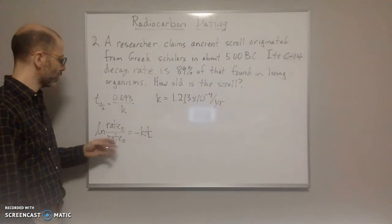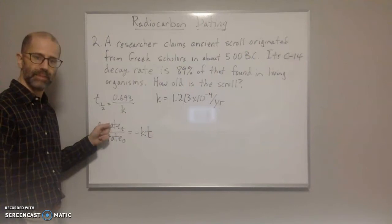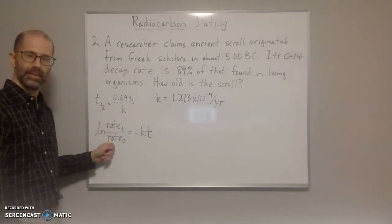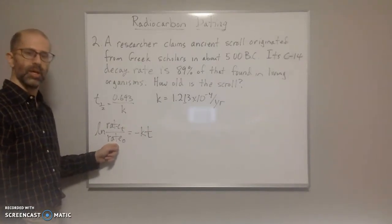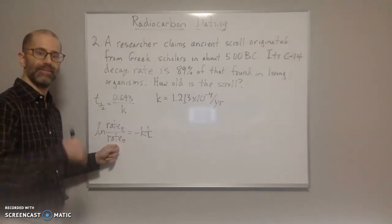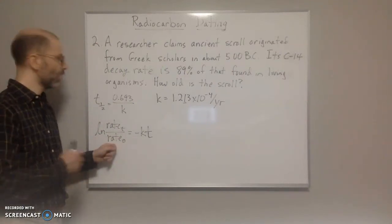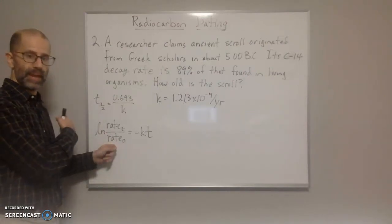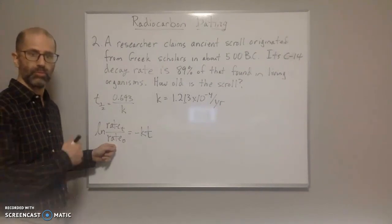Now all we need to do is plug that in here, but we need to figure out what the ratio of the rate at time t versus the rate at time 0, the initial rate. The assumption is always that the initial rate that we have today is the same and it's constant in the past. So whatever the rate is now, that must have been the rate back then.